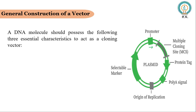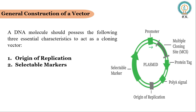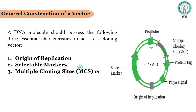Regarding the general construction of a vector, a DNA molecule should possess the following three essential characteristics to act as a cloning vector: first, origin of replication; second, selectable markers; and third, multiple cloning sites (MCS) or polylinker.